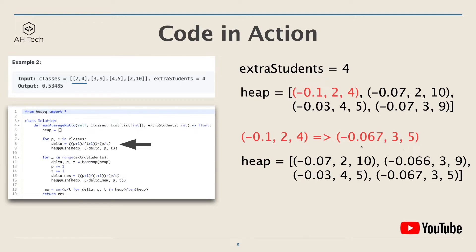So we will assign one extra student to class [2, 4]. The new delta, pass, and total in the subarray becomes 0.06735, and then we push the new tuple back into the heap.